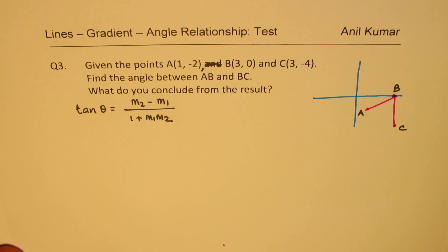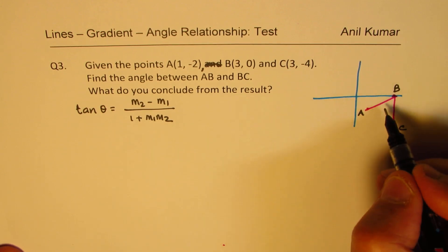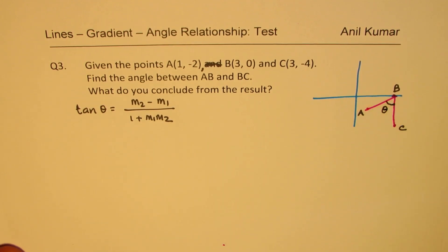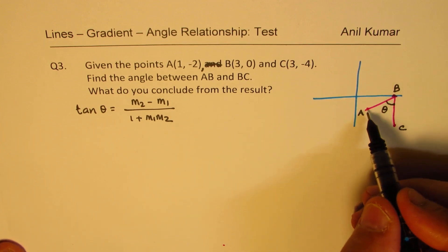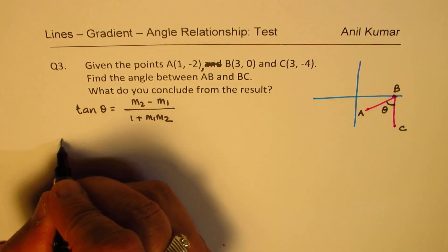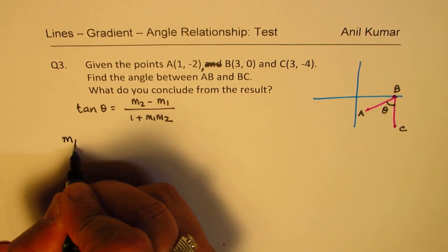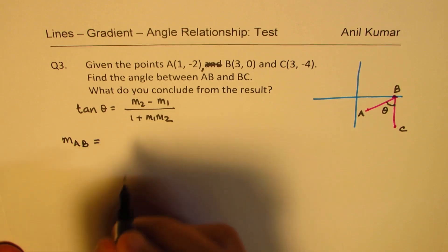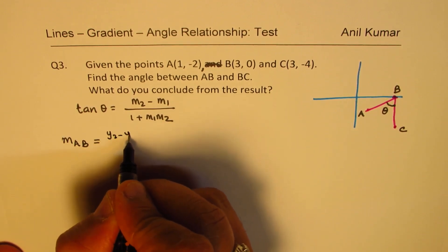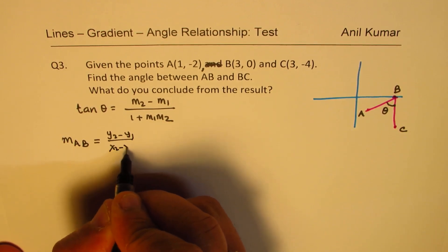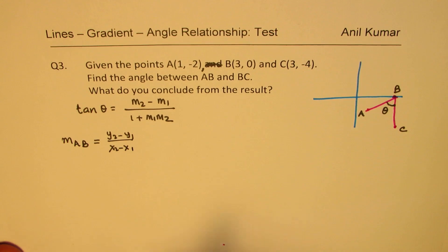We basically need to find this angle theta. So first we will find the slope of each line. What is the slope of AB? Using the formula y2 minus y1 over x2 minus x1.